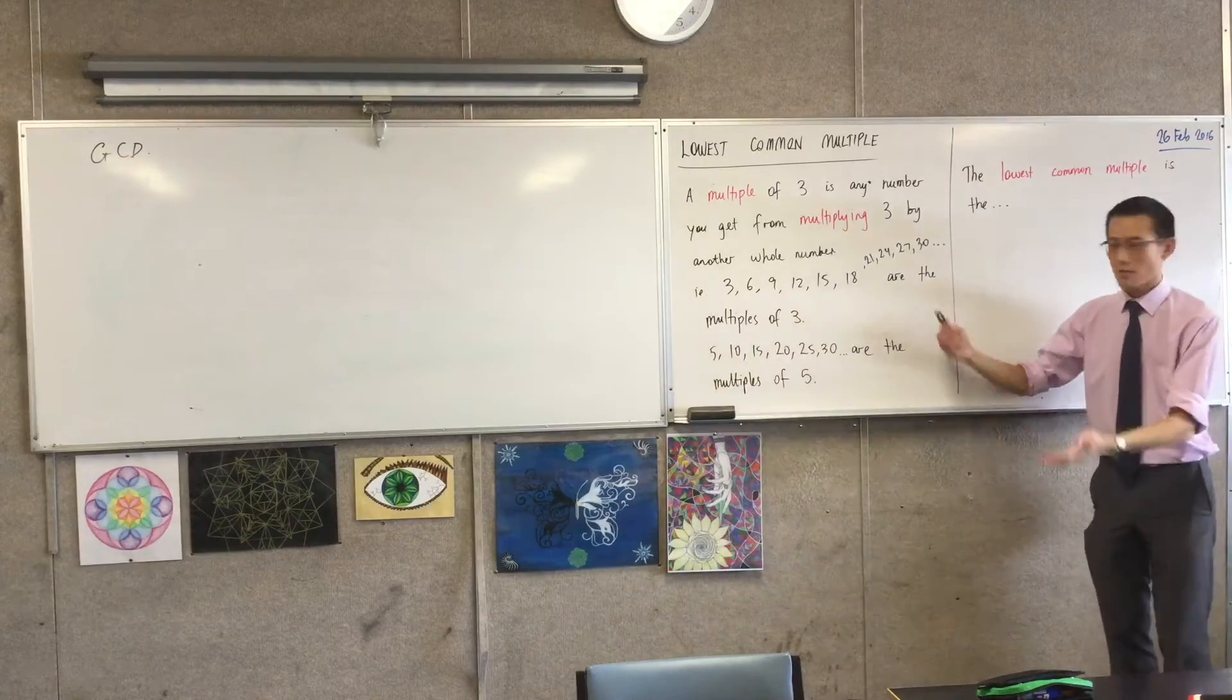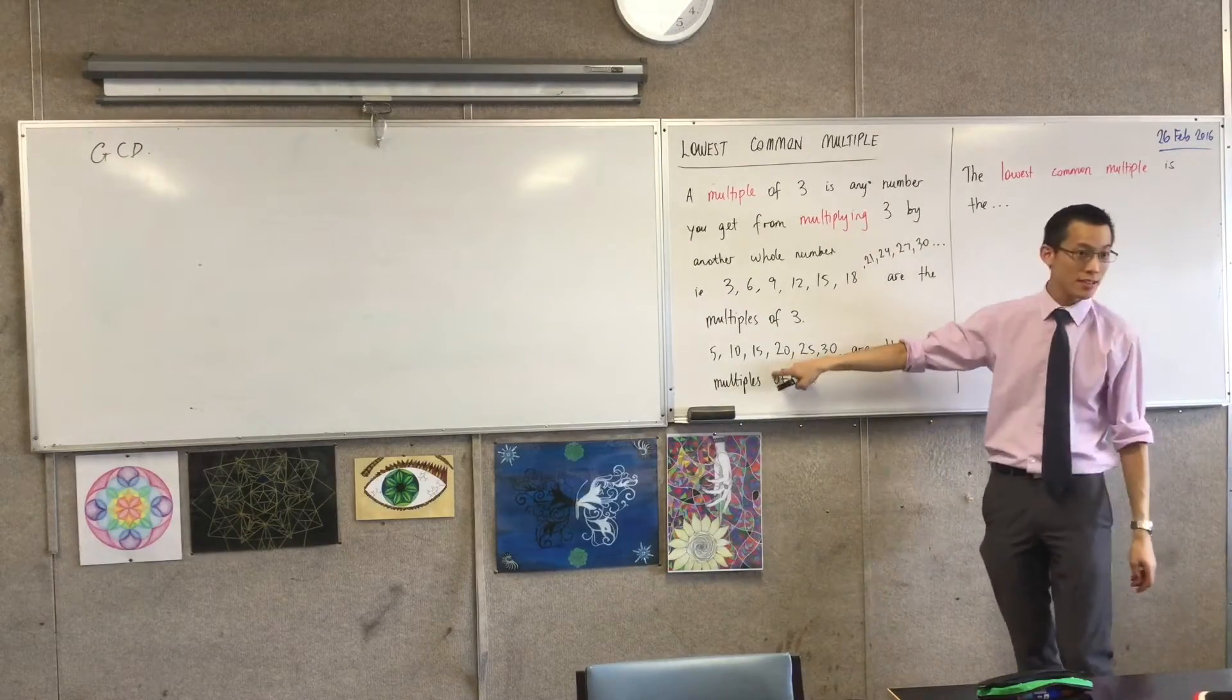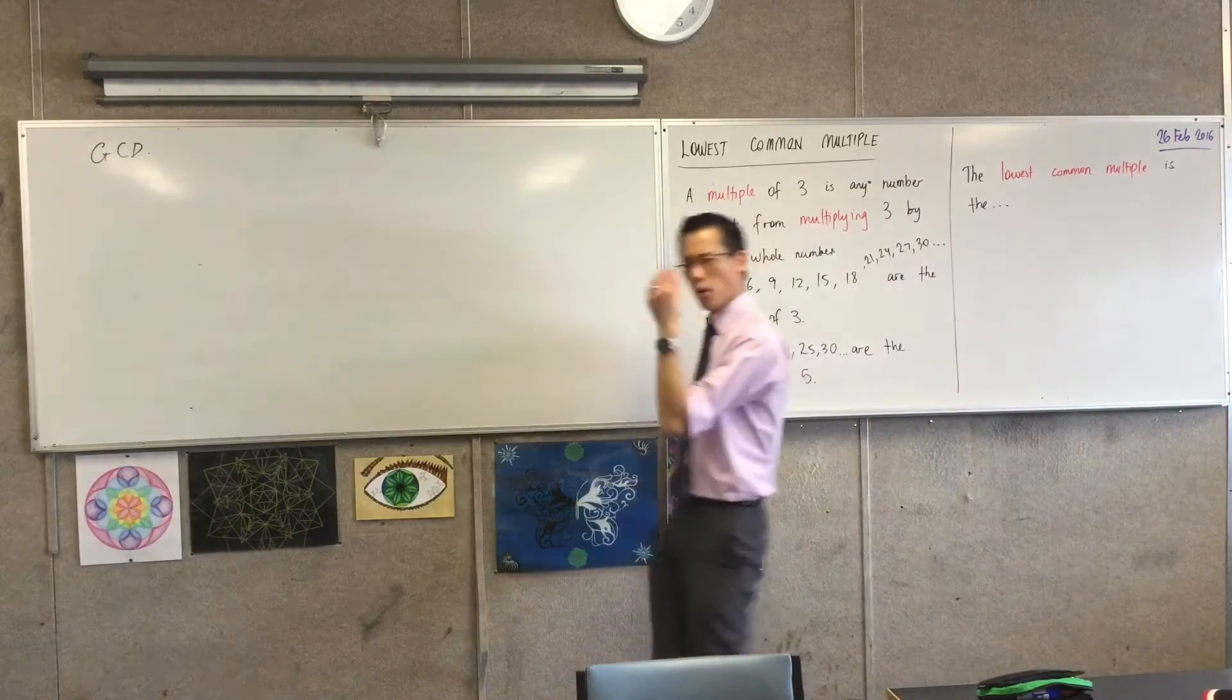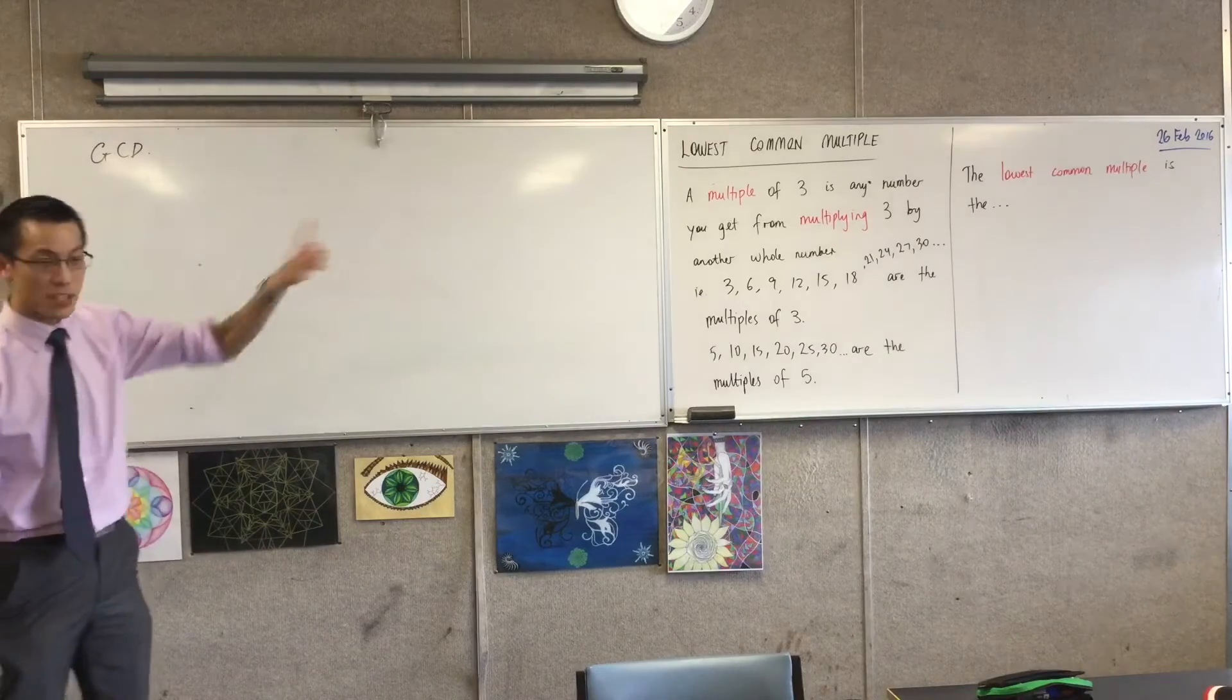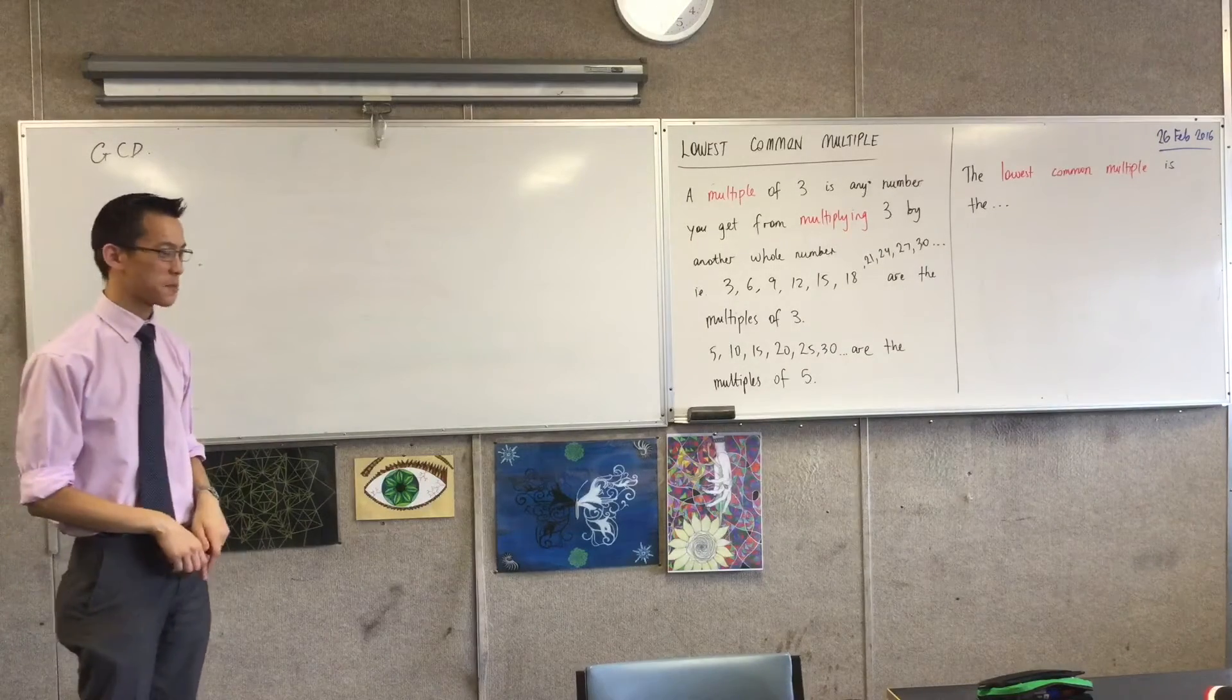You might start with a pair of numbers, right? Like, say, 18 and 20. And then the question was, well, what is the biggest number that you can divide, hence the divisor, into both of those and not leave any remainders, okay?